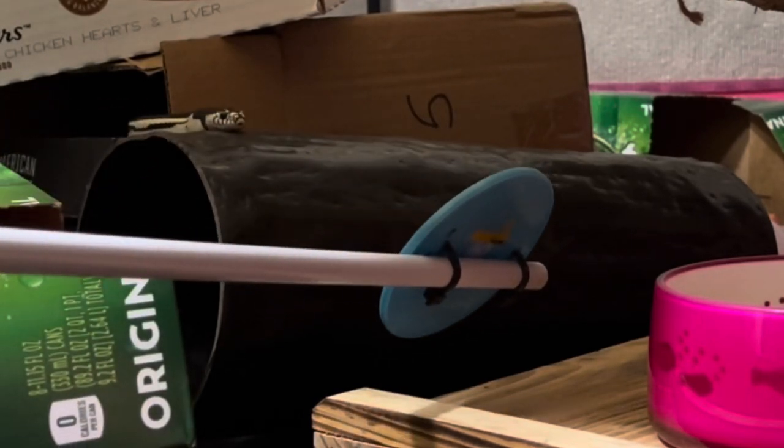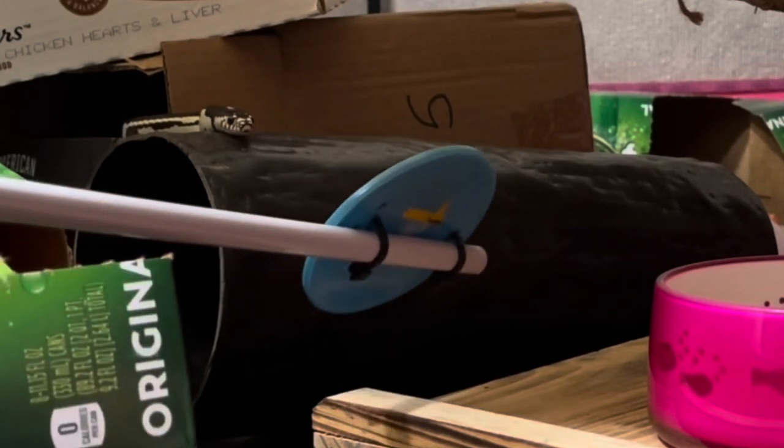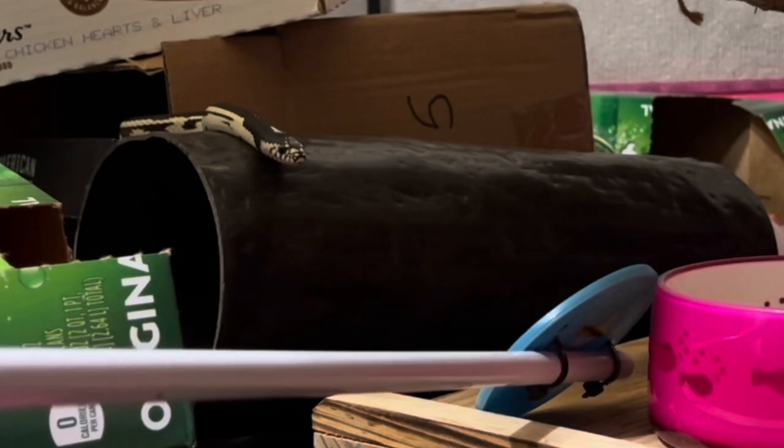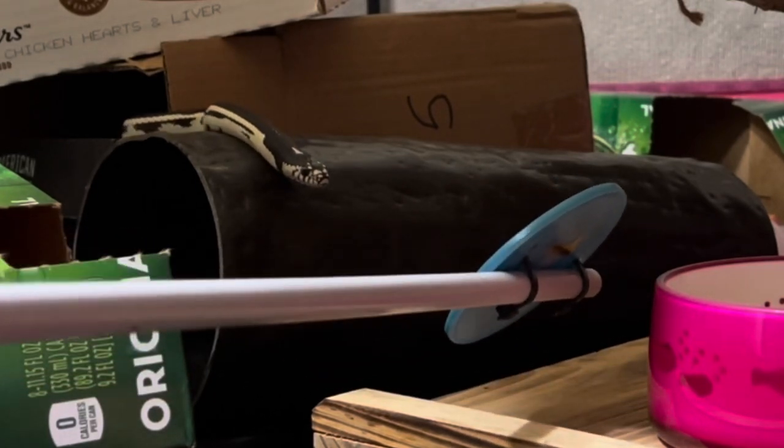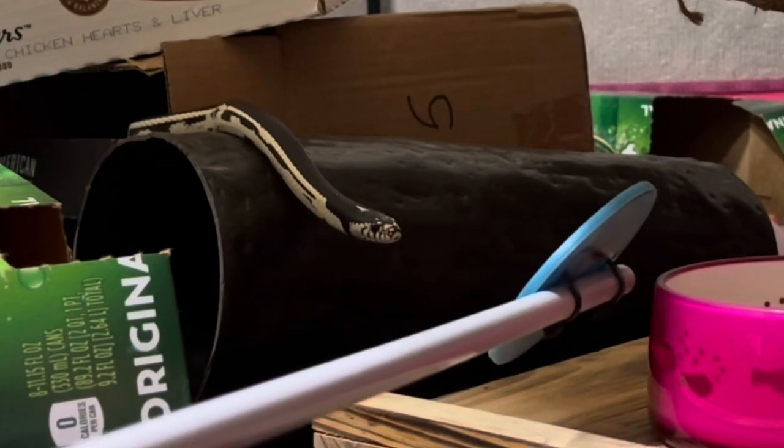I wasn't exactly sure where he was when I started. I thought he was in or around this log, and it turned out he was in that box behind the log. And I just asked him to come out of hiding and shift over the log and towards the water dish.